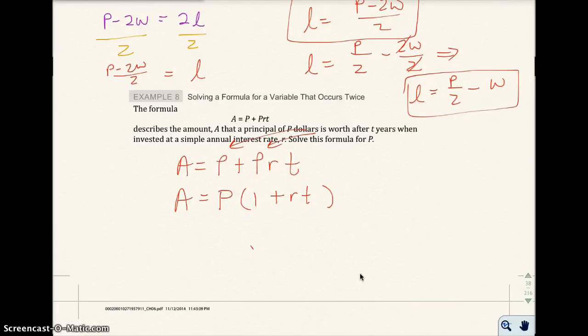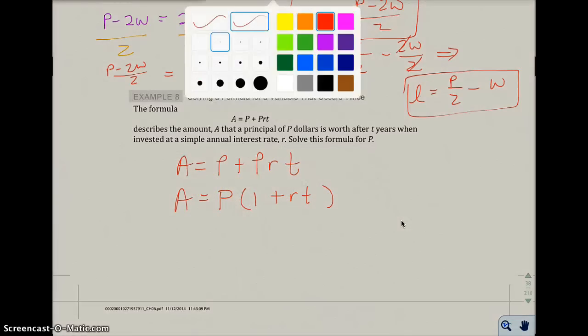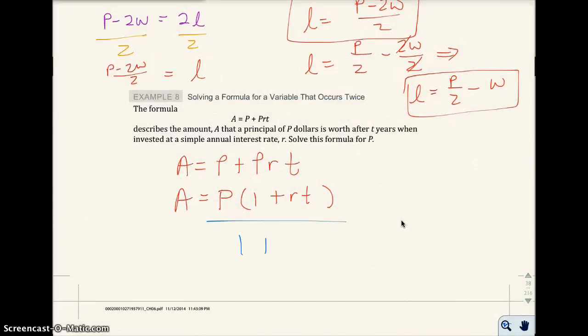Now we have P in one spot. And so we're going to get P alone. P is separated from all this by multiplication, which is right there. So I'm going to divide both sides by 1 plus RT. I'm doing that we will cross out. So P equals A over 1 plus RT. And I have P alone right now.